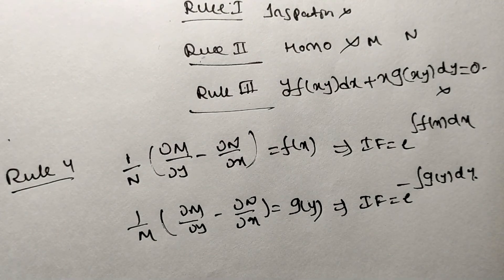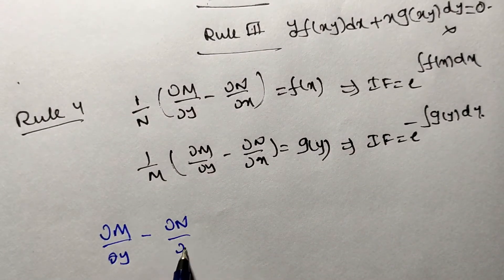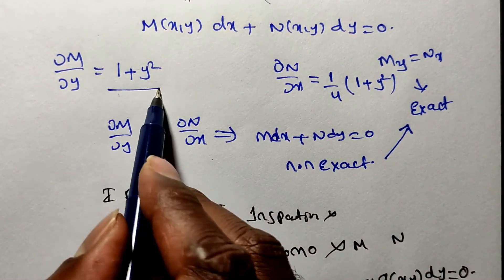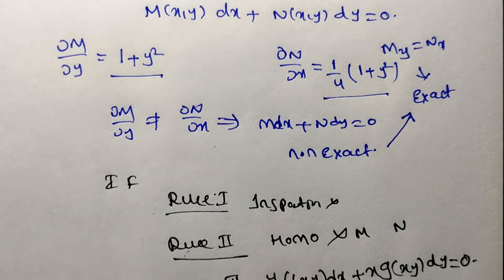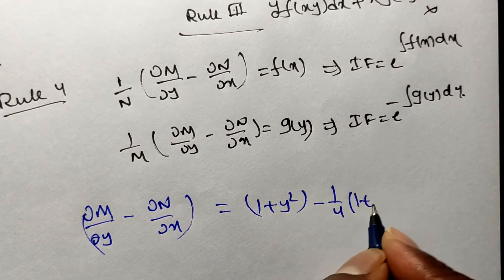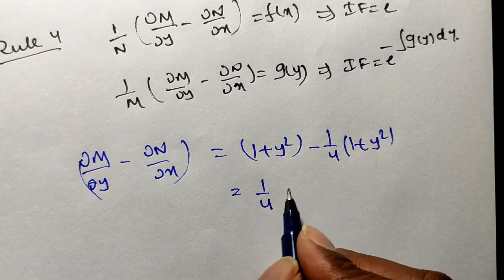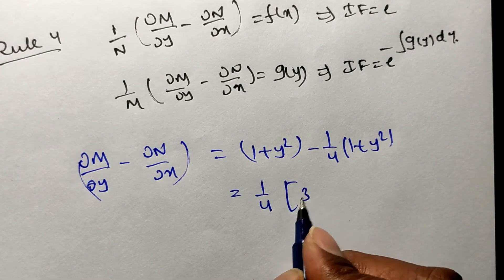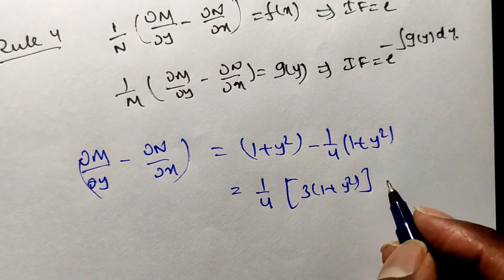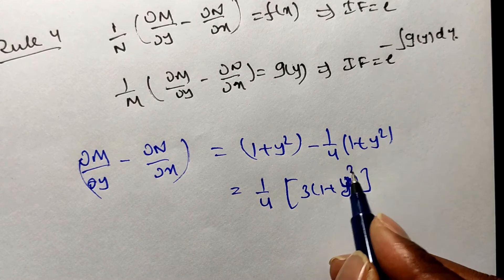∂M/∂y = 1 + y² and ∂N/∂x = (1/4)(1 + y²). So ∂M/∂y − ∂N/∂x = (1 + y²) − (1/4)(1 + y²). Taking LCM as 4: this equals (4 − 1)/4 times (1 + y²) = (3/4)(1 + y²). This is a function of y, but we now divide by M or N. This expression has two terms; M has three terms, so dividing by M is not possible. Take N.